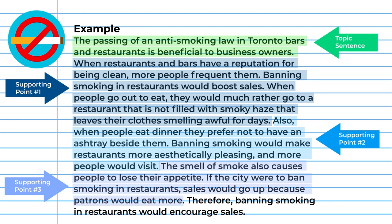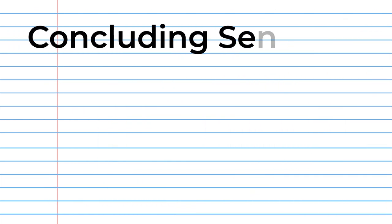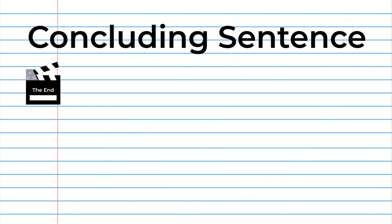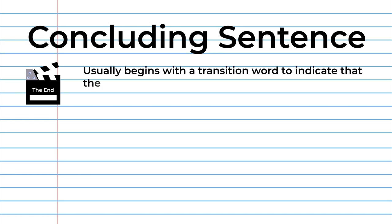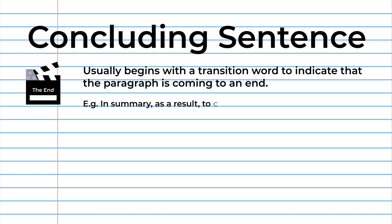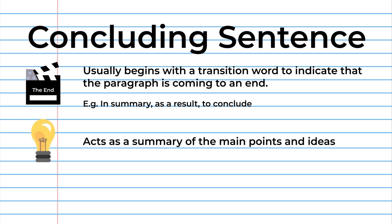Each of these points further develops the idea expressed in the topic sentence. The concluding sentence signals the end of the paragraph. It usually begins with a transition word to indicate that the paragraph is coming to an end — for example, using transition words such as "in summary," "as a result," and "to conclude." The concluding sentence acts as a summary of the main points and ideas of the paragraph.